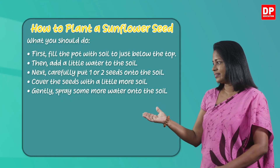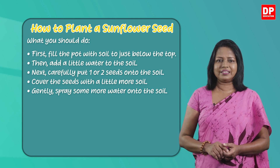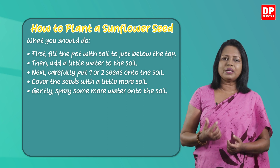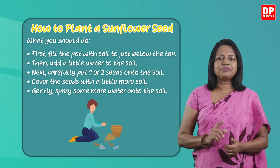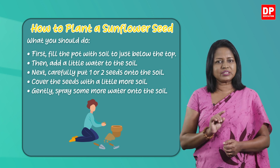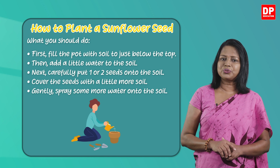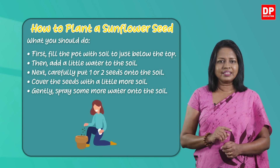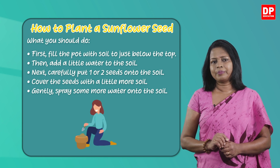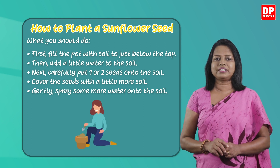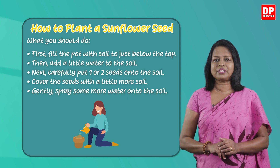Look at this. Here you have a set of instructions. Let's read it together. How to plant a sunflower seed: First, fill the pot with soil to just below the top. Then add a little water to the soil. Next, carefully put one or two seeds onto the soil. Cover the seeds with a little more soil. Gently spray some more water onto the soil.